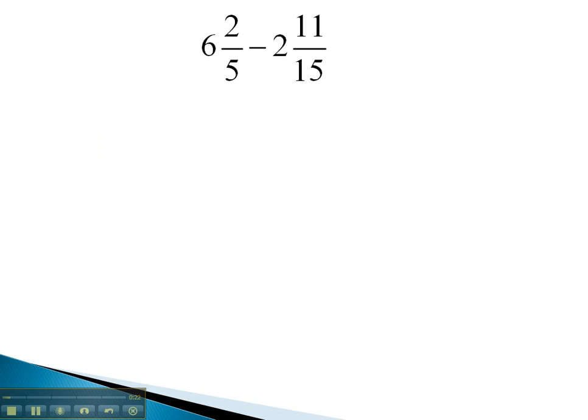In this first example, we're looking at 6 and 2 fifths, and we're subtracting 2 and 11 fifteenths. We know we need to start with the fractions and get a common denominator between 5 and 15, which will be 15.